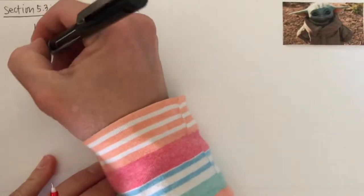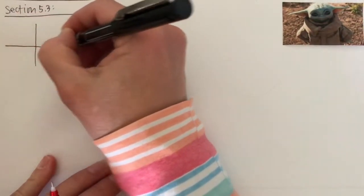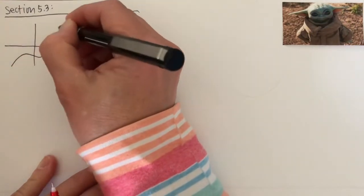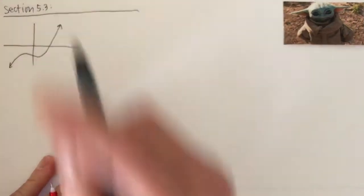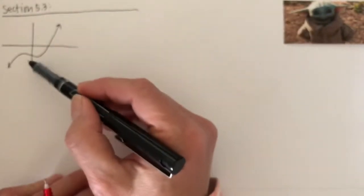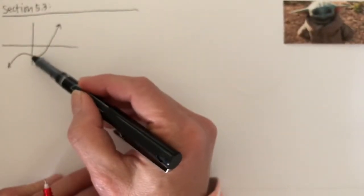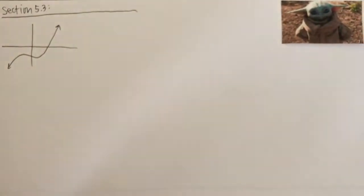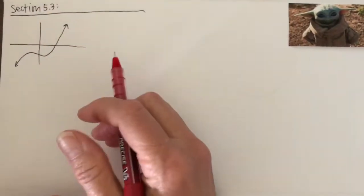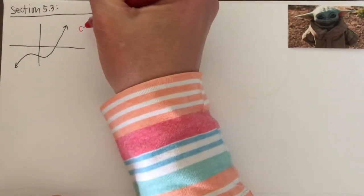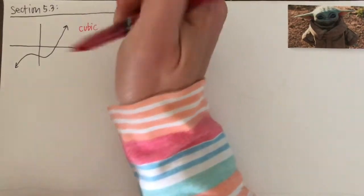I'm going to draw a picture of a function here, and you tell me what type of function you think this is. We've got two different concavities — concave down, concave up — an inflection point somewhere in here, one side going to negative infinity, one to positive infinity. This is definitely a cubic function, and we've seen those before.